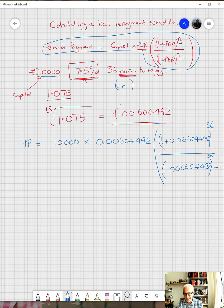When you put that into the calculator of choice, then what comes out is that the period payment in this case is equal to 309.93 euros per month. So you would have to pay that sum of money 36 times a month until you paid the debt down.